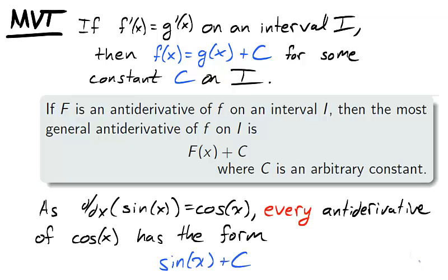Now because the derivative of sine is cosine, every antiderivative of cosine has the form sine x plus c.